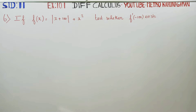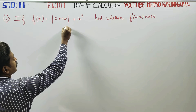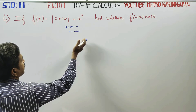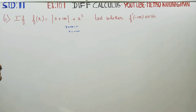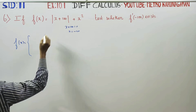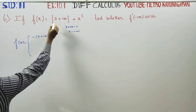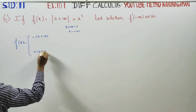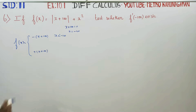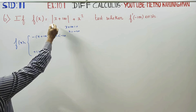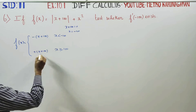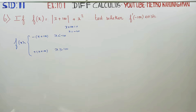First, we redefine the function. Now, if you have absolute value, then resolve it. x plus 100 is equal to 0, so x is equal to minus 100. Then we set up the less than and greater than cases. When x is less than minus 100, the function gives minus of x plus 100 plus x squared. The absolute value modulus gives plus or minus, so the function is redefined piecewise.